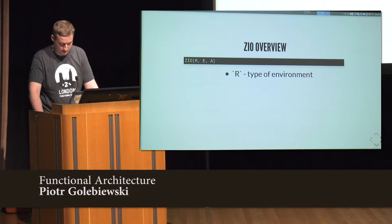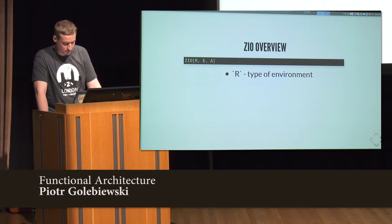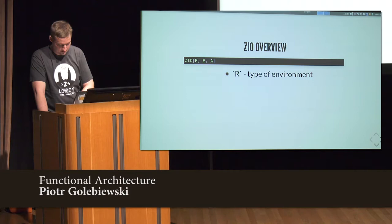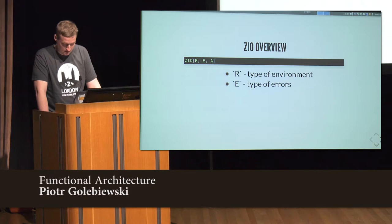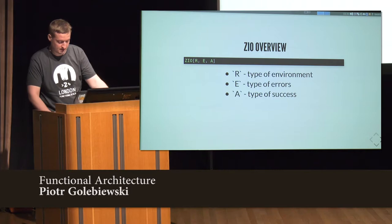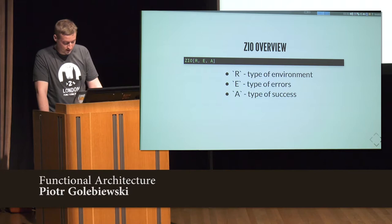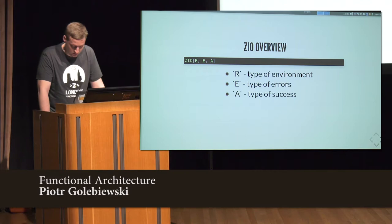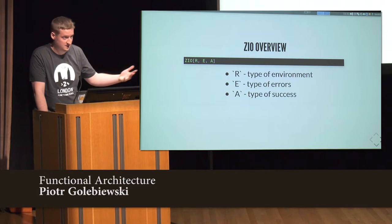At its core it uses the ZIO data type, which represents a description of a program that you might run in the future. It has three type parameters. The R — the first one — is the type of the environment that we need to provide to the program in order to run it; if it's Any, it means there are no requirements. The E is the type of the error this program can produce, used to represent recoverable errors; if it's Nothing, it means the program cannot fail. And the A is the type of the value this program can produce; if it's Nothing, the program can never succeed — it will either always fail or never stop running. If it's Unit, it means it produces no useful information apart from the fact that it succeeded.